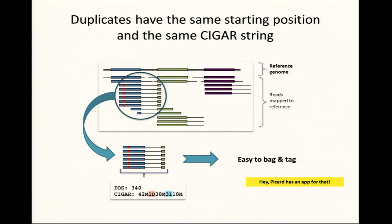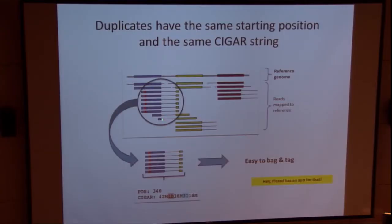In order for the algorithms to actually detect the duplicates, they rely on looking at the start and end positions of the reads, and you need the alignment to get that information. Basically, what it's going to look for in your aligned reads are reads that have essentially the same alignment — the same start, the same stop, the same gap information — and it's going to say these reads are just identical copies of the same underlying fragment.